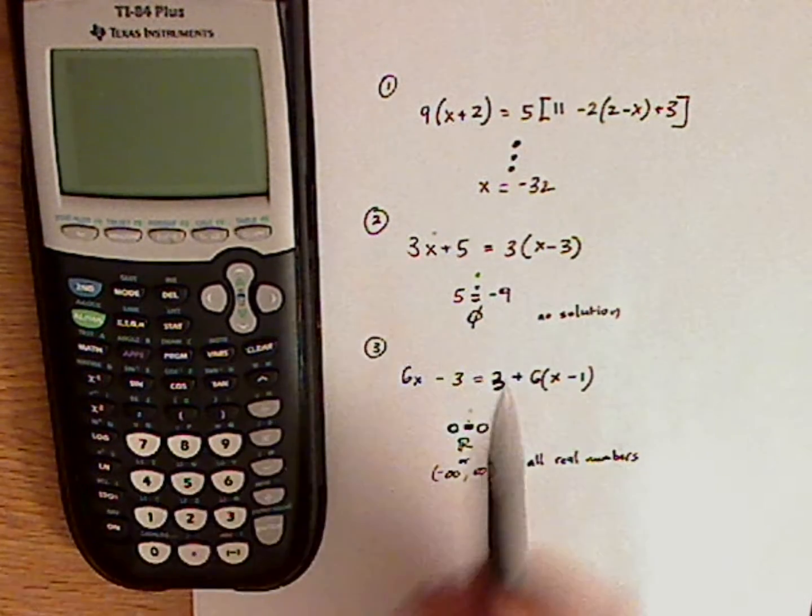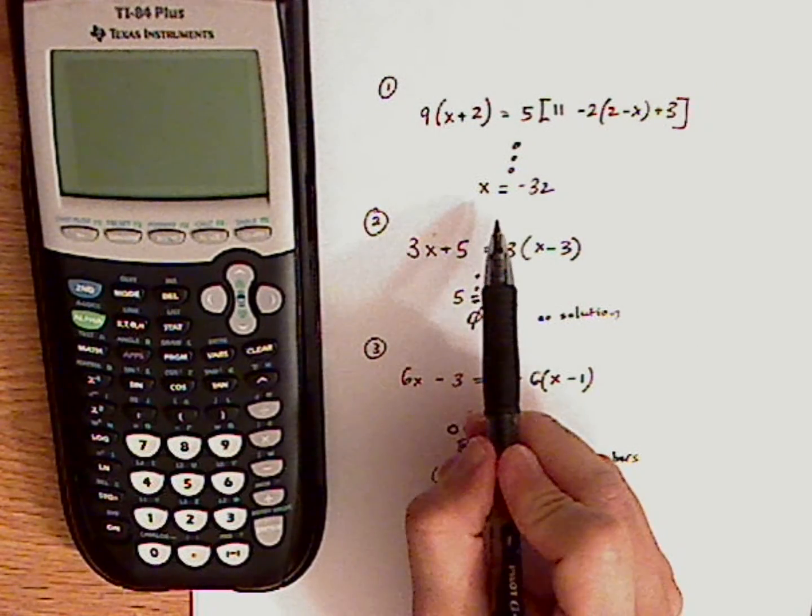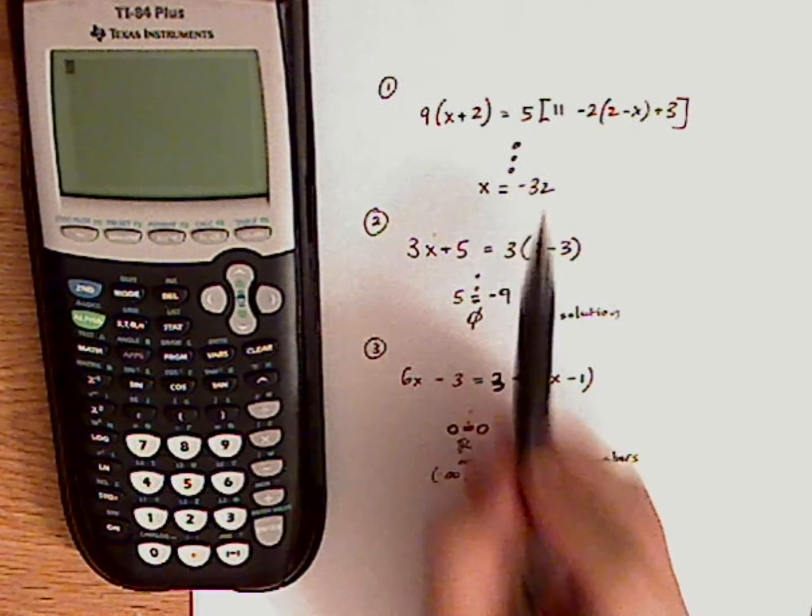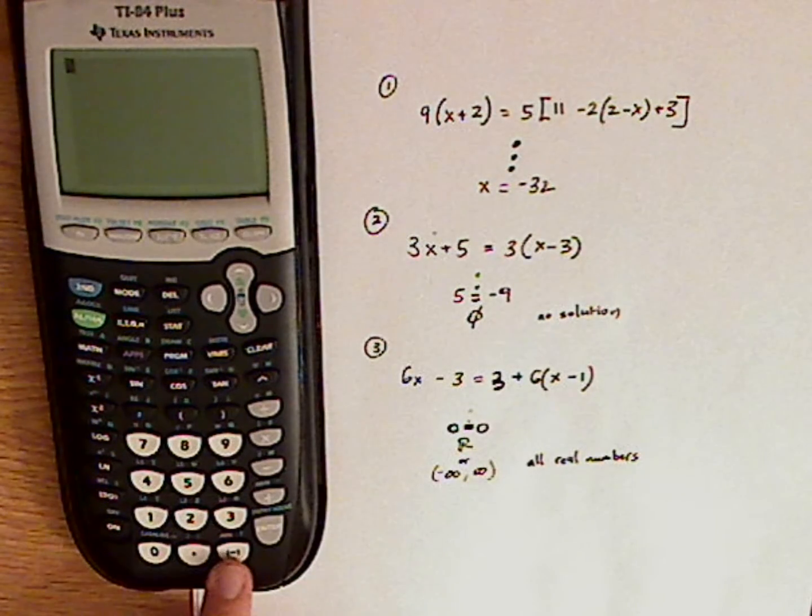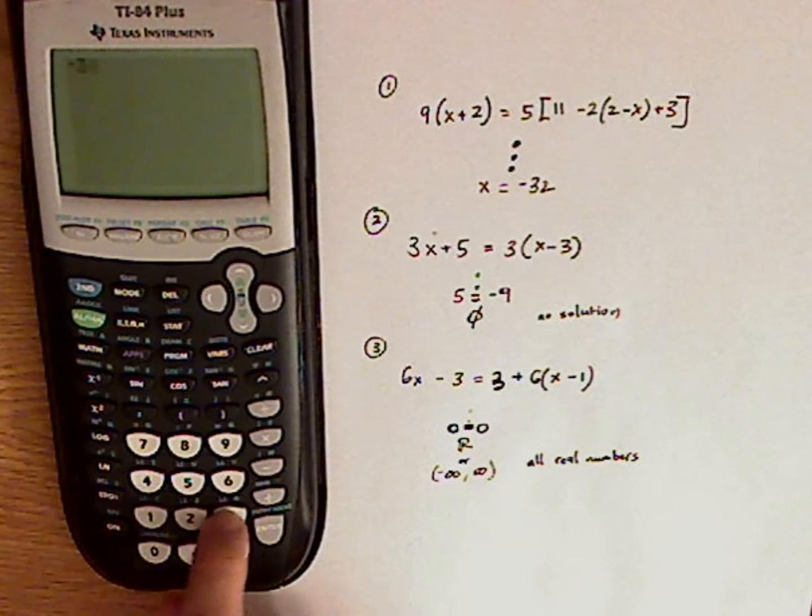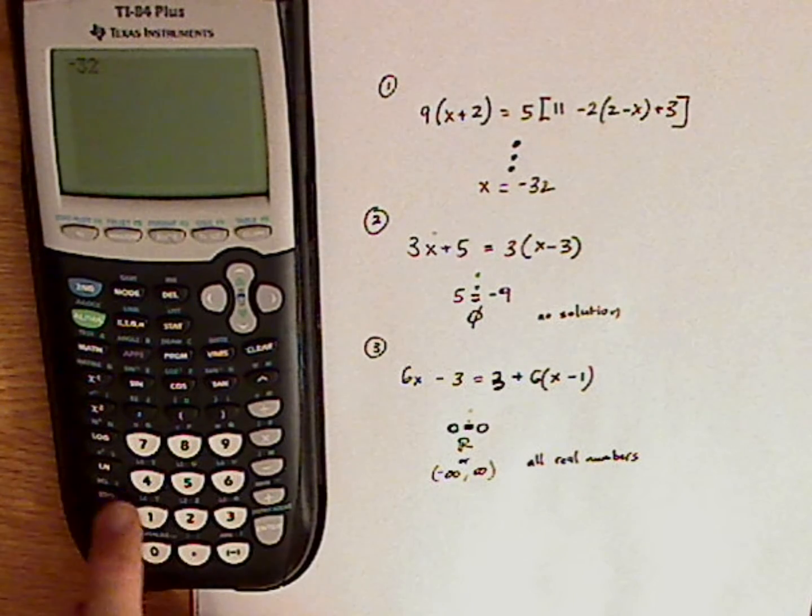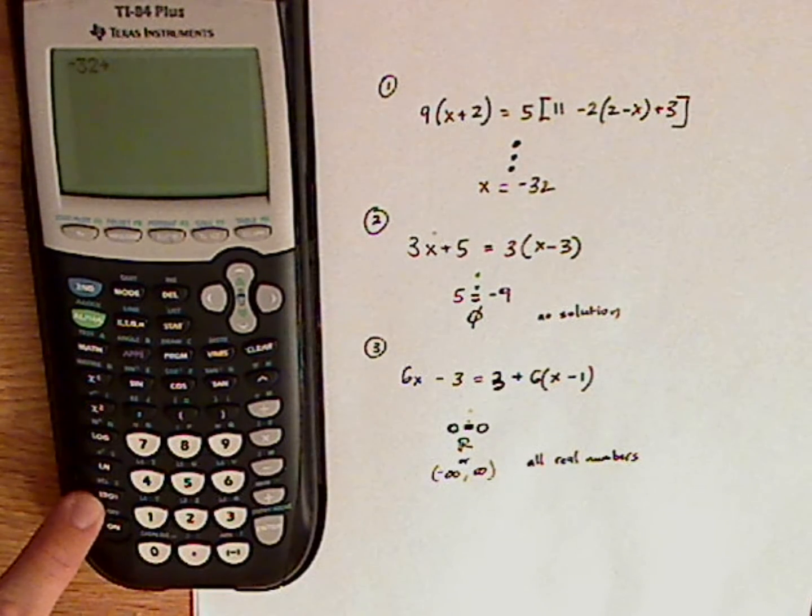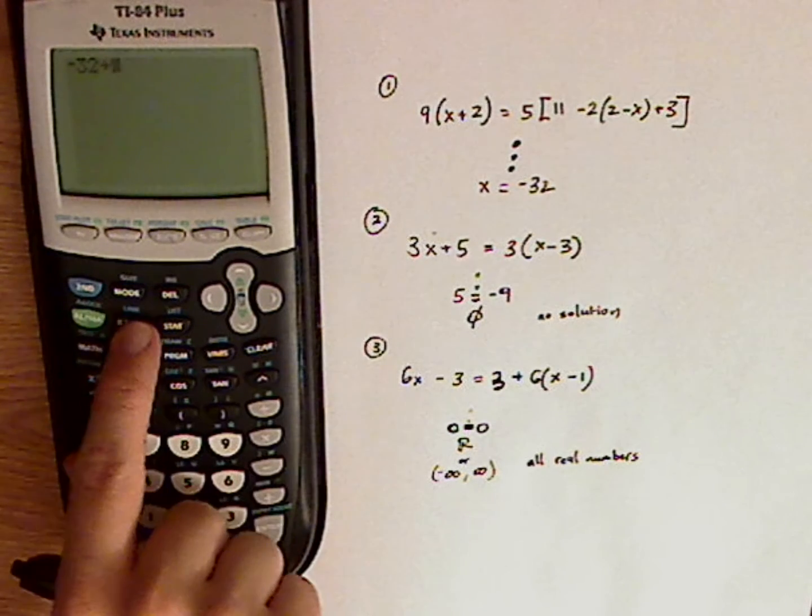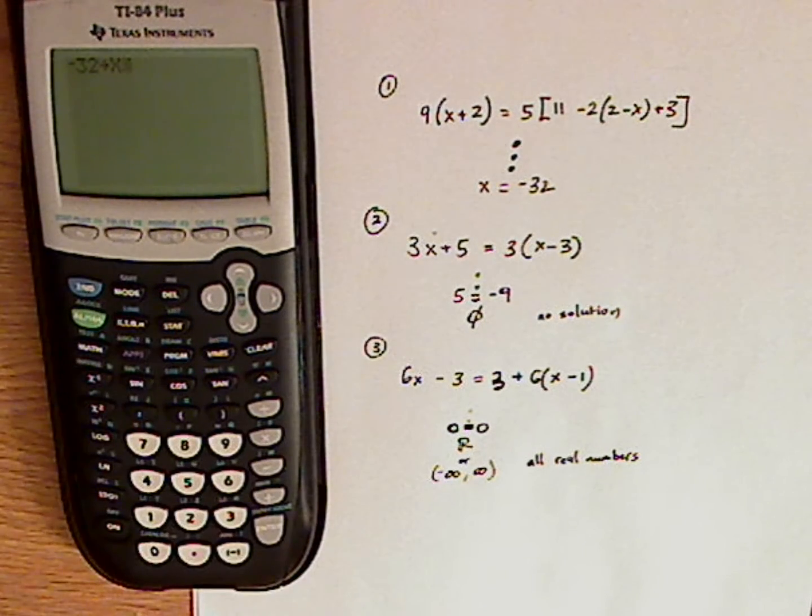Let me show you the first way. The first way is just to use the store button. So you take negative 32 and remember to push the negative sign, negative 32, store it. That's the store button right there. And then push the variable button for x.